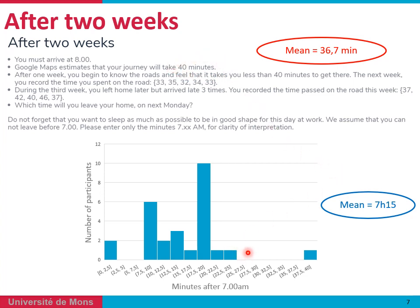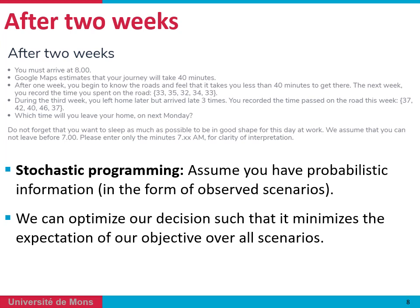That allowed you to take more risk or take advantage of this information. Some of you decided to go later than 7:20 to sleep more, and most of you decided to shift decisions to 7:20 instead of 7 a.m. On average, you decided to go later based on this new information. What you did is called, in mathematical programming, stochastic programming or scenario-based programming — you tried to optimize your decision such that it minimized the expectation of your objective over all the scenarios.